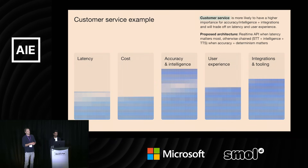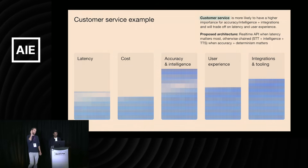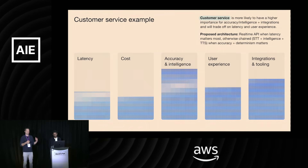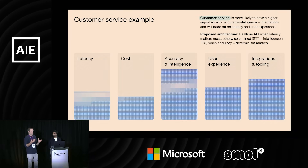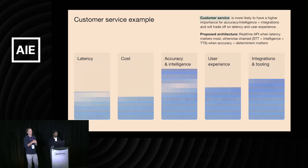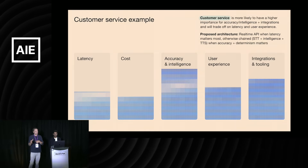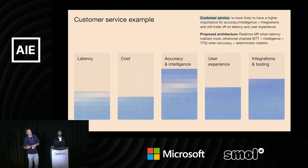For customer service, the trade-offs are different. Accuracy and intelligence probably matters the most — you can't get an order number wrong. If the model goes to delete an order instead of updating it, that's a big deal. Integrations and tooling start to matter a lot more too, because now you have to integrate with your various internal systems and SIP and phone providers if needed. User experience still matters, but you'll probably take a hit there to ensure accuracy. Latency still matters, but not as much, because accuracy and intelligence matters more. The real-time API might make sense where latency matters most, but if you care about determinism and accuracy, the chained architecture also makes a lot of sense here.